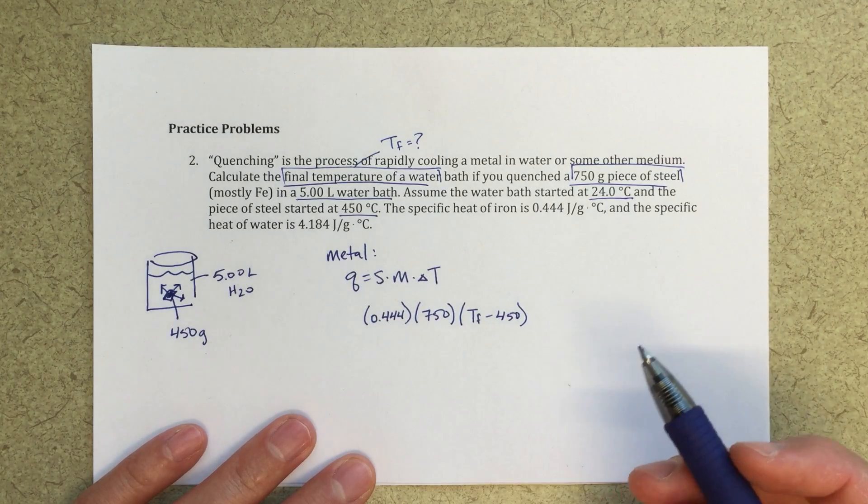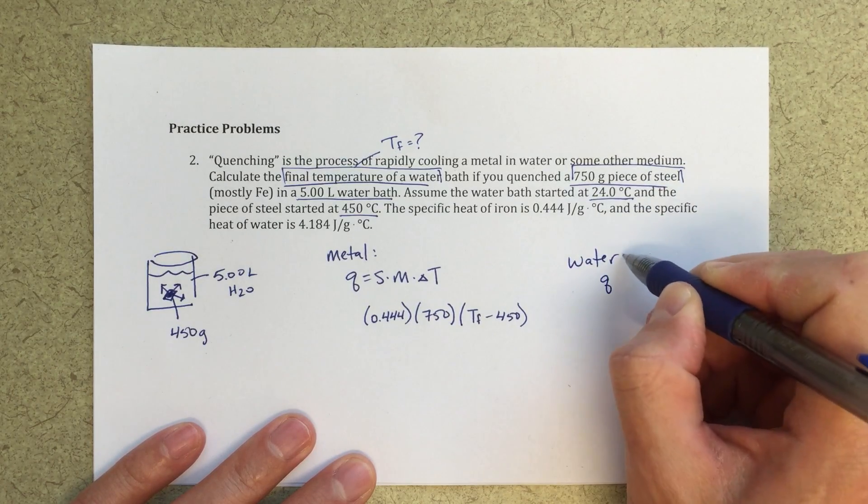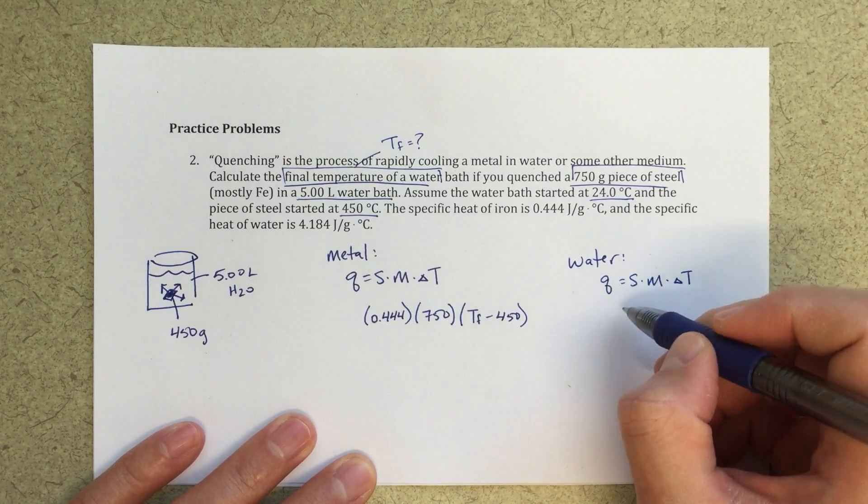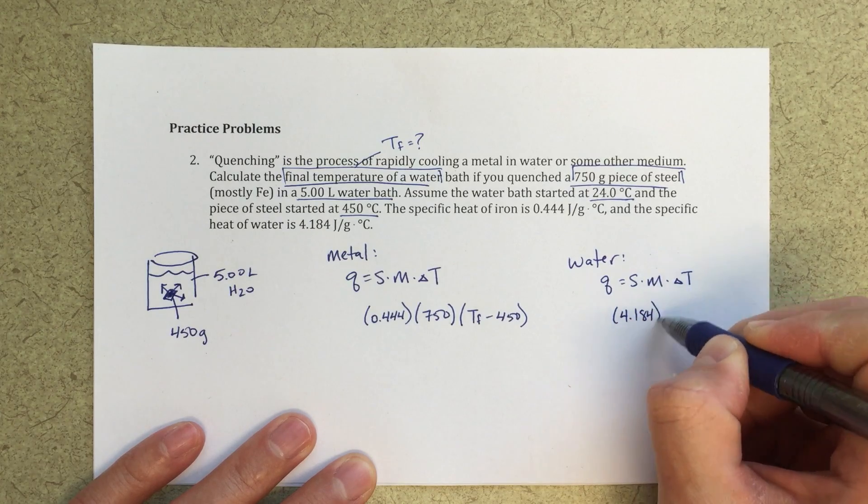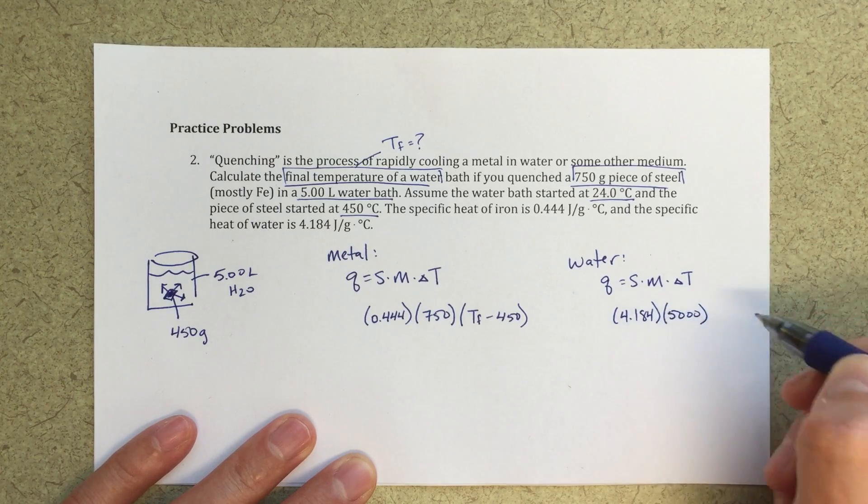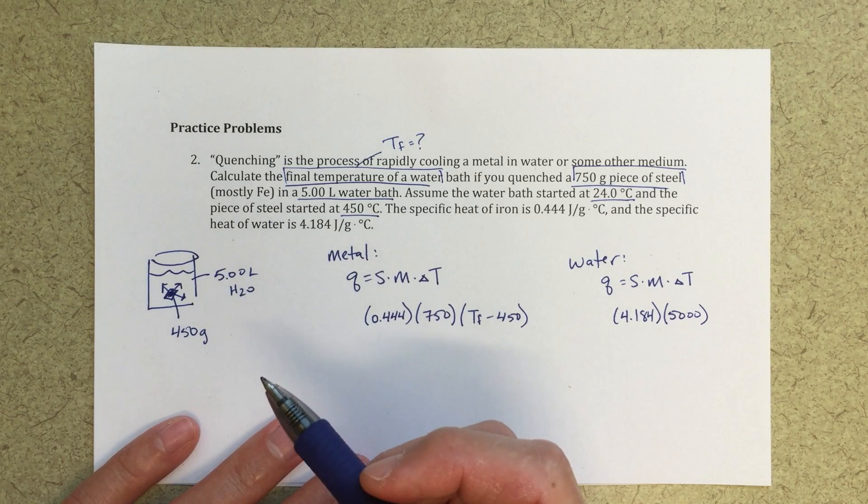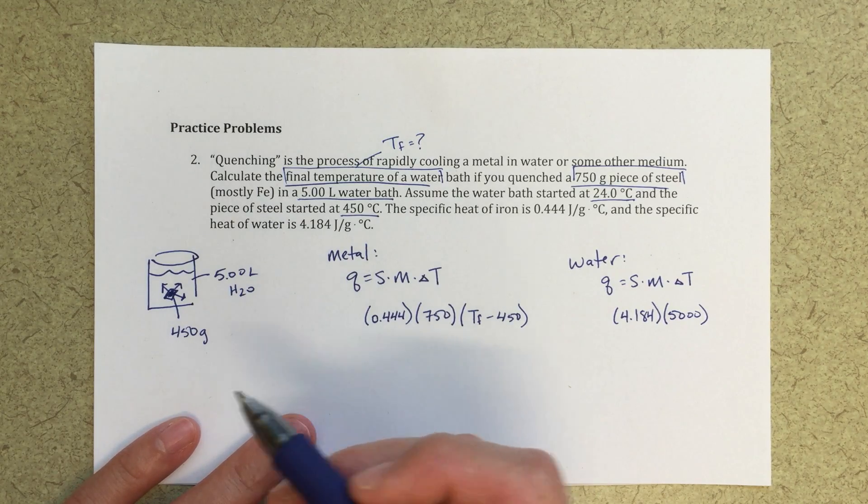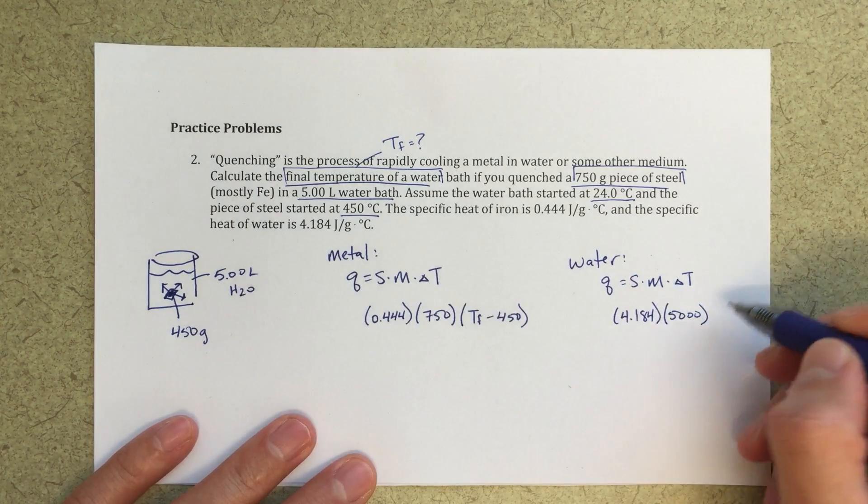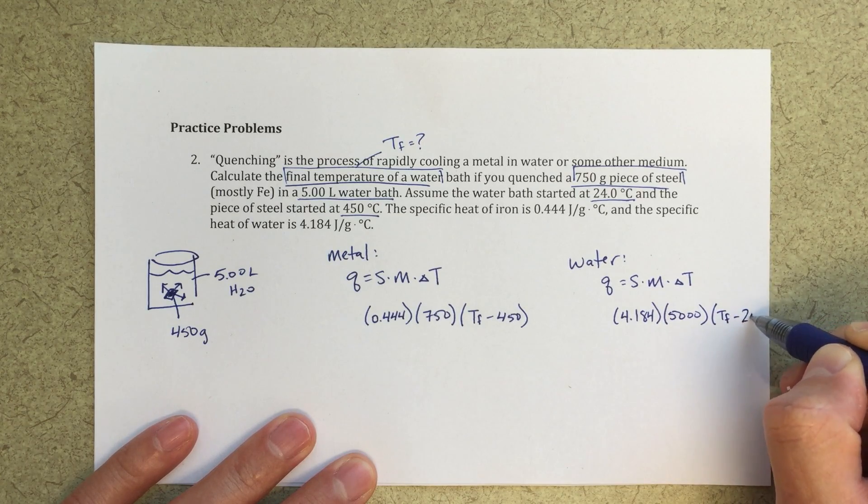Now I can do this similar thing for the water. So for the water, again, q equals s times m times delta t. And my s value for water is 4.184. And my mass for water is going to be, in this case, 5,000. So I came up with 5,000 because 5 liters is 5,000 milliliters, and the density of water is 1 gram per milliliter. So 5,000 grams would be the mass of 5 liters of water. Again, my delta t, t final minus my t initial, in this case that's going to be 24.